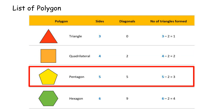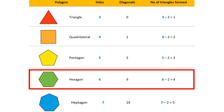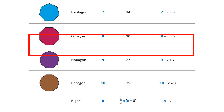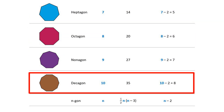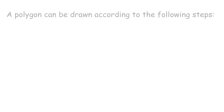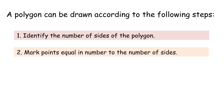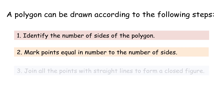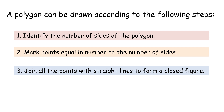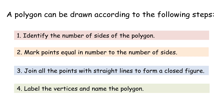List of polygons: Triangle, Quadrilateral, Pentagon, Hexagon, Heptagon, Octagon, Nonagon, Decagon, N-gon. A polygon can be drawn according to these steps: 1. Identify the number of sides. 2. Mark points equal in number to the number of sides. 3. Join all the points with straight lines to form a closed figure. 4. Label the vertices and name the polygon.